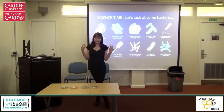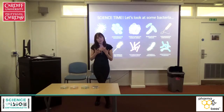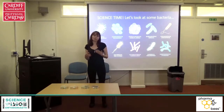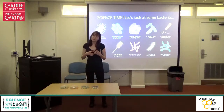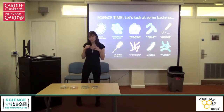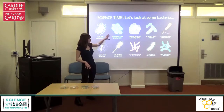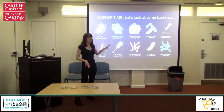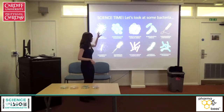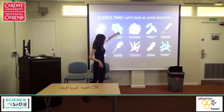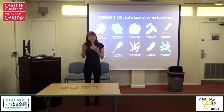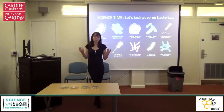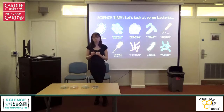Bacteria are tiny microorganisms that are found everywhere. Some of them are friendly and helpful for things like digestion, but other bacteria can cause very serious diseases. As you can see from looking at these different types of bacteria, they're not all the same — they come in all kinds of different shapes and sizes. Some of them are round bead shapes, some of them have little tails that we call flagella. Those different shapes help them to do different jobs and to live in different parts of the body and on different surfaces, so they're perfectly adapted to survive in very specific conditions.